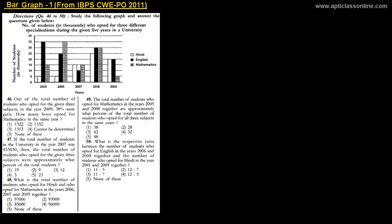Welcome to the class. In this class we will discuss bar graphs under the subject of data interpretation. We will discuss this topic with the help of an example that has been asked in the IBPS Common Written Examination for PO in 2011. As the name suggests, in bar graphs data is shown with the help of vertical or sometimes horizontal bars. You can see these are the actual bars — there are three different bars shown for different years starting from 2005, representing three different categories.